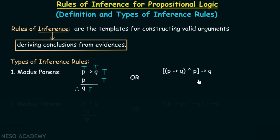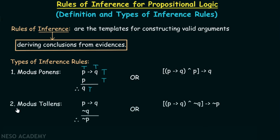The second rule is the modus tollens rule. According to this rule: p implies q, not q, therefore not p. As we know, p implies q is true and not q is true; therefore, we need to conclude that not p is also true.